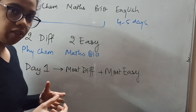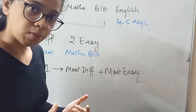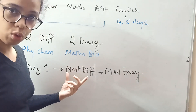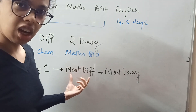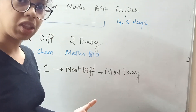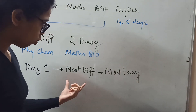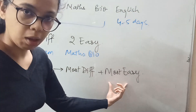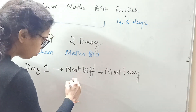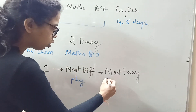Now, here is how to make the timetable. When you start studying, begin with the subject that is most difficult. After completing that difficult subject goal, spend the rest of the day on the easiest subject. So Day One target: most difficult plus most easy. For most students, Physics is the most difficult, and Biology is the easiest. So Day One is Physics and Biology.